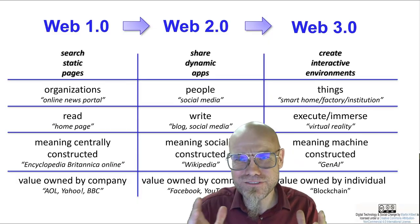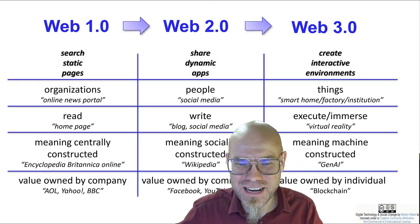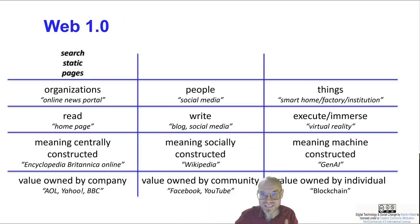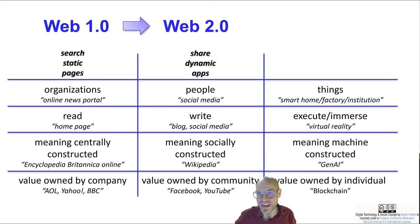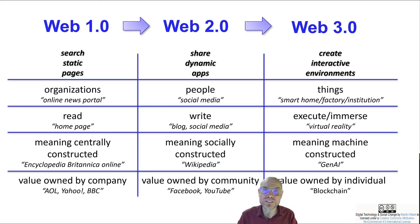Summing up: I can't give you a clear-cut definition, but you can think about it like this. Web 1.0 — search static pages. Web 2.0 — share dynamic apps. Web 3.0 — create and generate interactive environments. The rest is our responsibility to socially construct web 3.0 and everything that comes afterwards — 4.0, 5.0, and so forth.